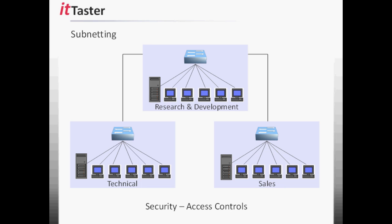We're also able to add a layer of security to a network by dividing it into subnets. Access controls can be added to filter traffic between networks. For example, we may only want to allow specific departments to communicate with each other, or even specific hosts.